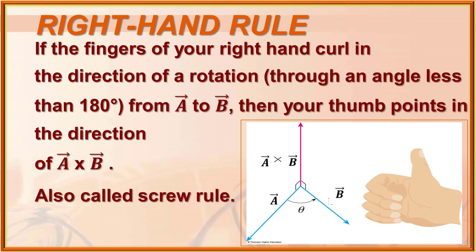To apply the right-hand rule: place your right hand, draw the vectors, then curl the fingers of the right hand in the direction of rotation. For a cross b, place fingers along a and curl them toward b. The erected thumb points in the direction of resultant a cross b. There is a difference between a cross b and b cross a — for a cross b, we curl from a to b.